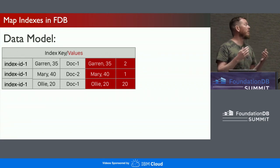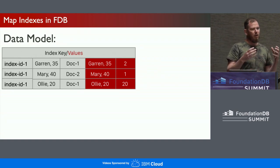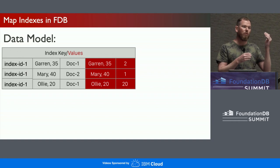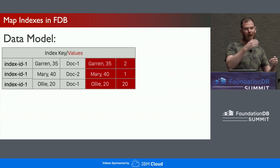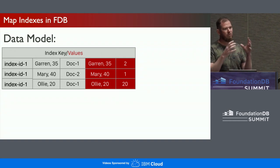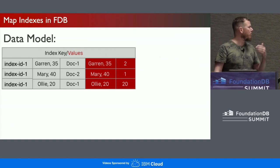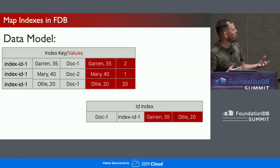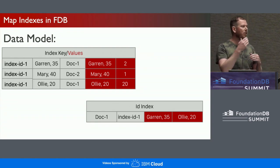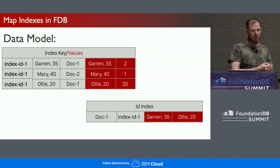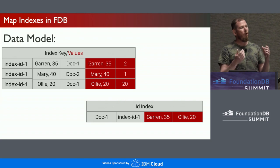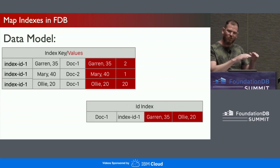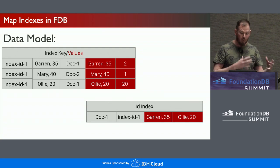With Mango indexes, every time we update the index — because we're doing it in the document update transaction — we can fetch the old document, look at its keys in the index, remove those old keys, look at the new document being updated, and add the new keys into the index, all in one transaction. But with MapReduce, because it's built in the background, we can't fetch the old full document body. So we maintain what we call an ID index, which keeps a list of the keys for a specific document that are added to an index. Every time we update an existing index, we look at the ID index for the old set of keys, remove those from the index, get the new keys, add those into the index, and update the ID index as well.